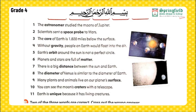Statement four: Without gravity, people on Earth would float into the air. Statement five: Earth's orbit around the Sun is not a perfect circle. Statement six: Planets and stars are full of matter.